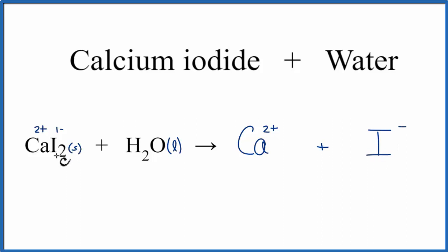Since we have these two iodine atoms here in the CaI2, we really do need to put a coefficient of 2 in front of the I, so this is balanced. We have two iodines here, and we have two iodide ions here.